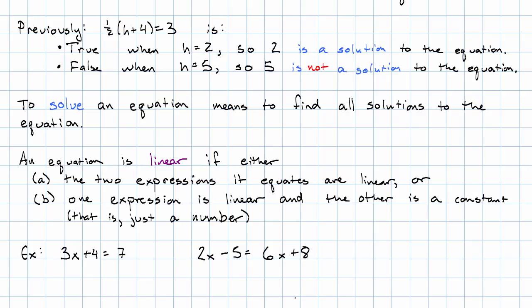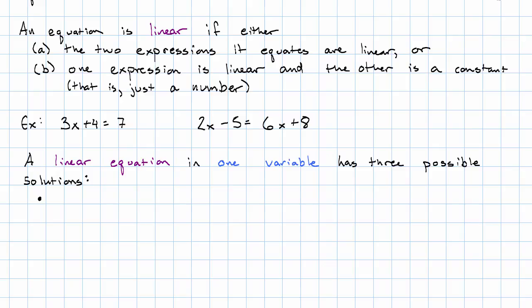And in the case where we have a linear equation, I can tell you how many solutions it's going to have. So a linear equation in one variable, so only one letter, has three possible sorts of solutions. Maybe there's no solution. For example, the equation x plus 2 equals x has no solution, because there's no number that when you add 2 to it, you get that number back. Maybe every number is a solution, and those expressions are actually equivalent.